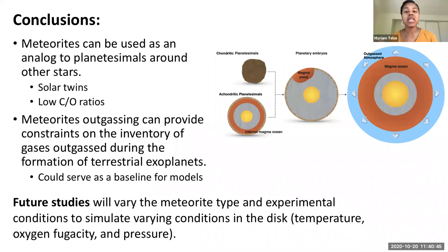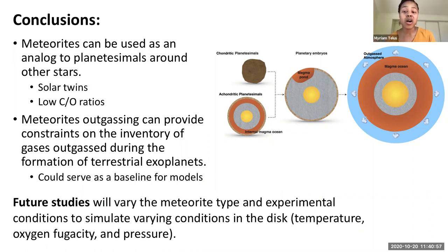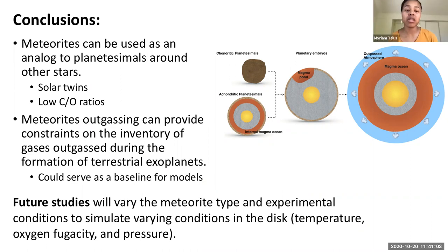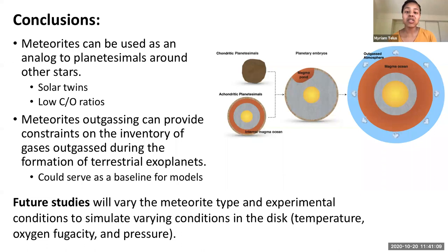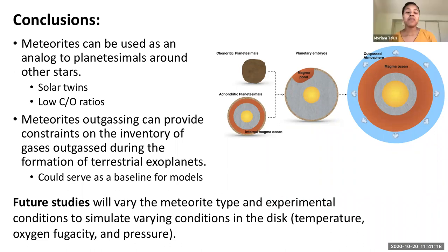Based on the composition of the stars and therefore the inferred composition of the planetesimals, meteorites are useful for studying planetesimals and terrestrial planets around other stars. This is particularly the case for sun-like stars and stars with C-to-O ratios consistent with oxygen-rich, oxidizing environments. Therefore, using meteorites to put constraints on the composition of exoplanets and their atmospheres is a fair starting point.